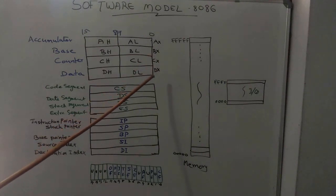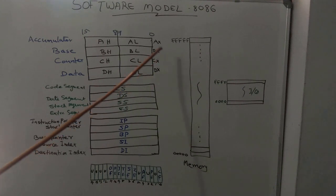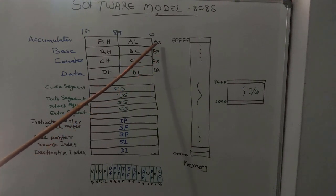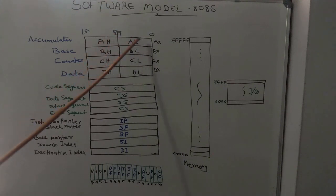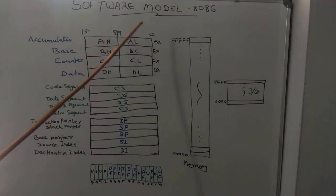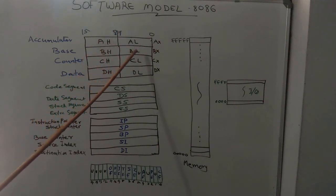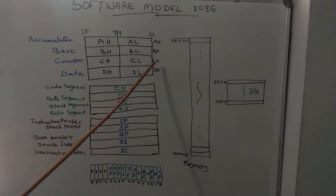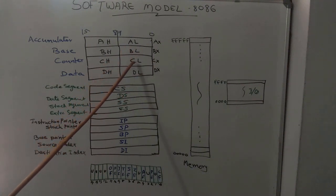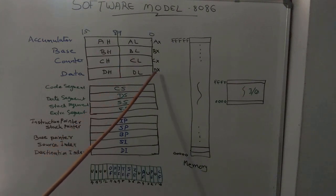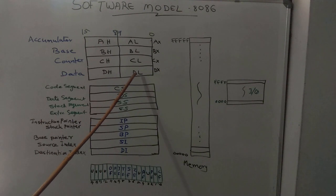These 16-bit registers can be treated as two 8-bit registers. The AX register's higher 8-bit portion is called AH and the lower 8-bit portion is called AL. The BX register's higher 8-bit portion is called BH and lower is BL. The CX register's higher 8-bit portion is CH and lower is CL. DX's higher 8-bit portion is DH and lower 8-bit portion is DL.